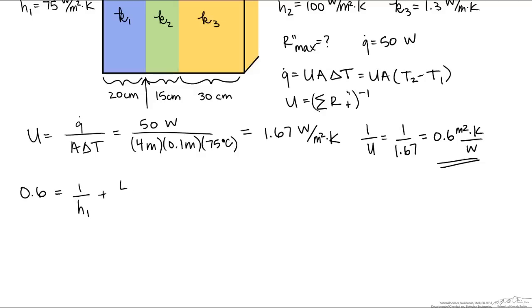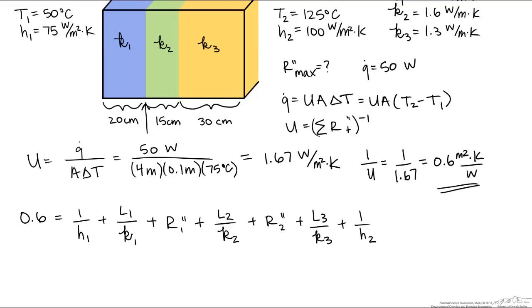This 0.6 is going to be equal to 1 over h1 plus L1 over k1, the first convective followed by the first conductive resistance, the second conductive resistance, and the third conductive resistance. So these are through the different materials of the wall.